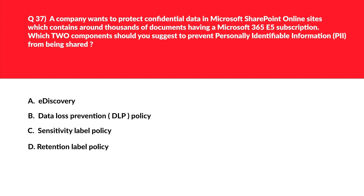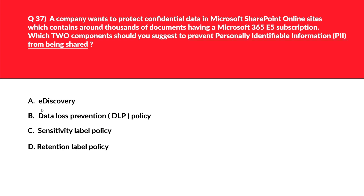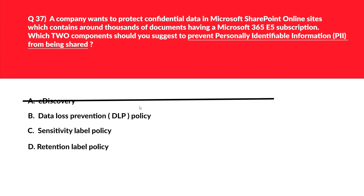Option C — Microsoft Information Protection — is locked as the correct answer. Looking at the next question: option A is eDiscovery, which helps organize and respond to legal matters or internal investigations — not required here, so A is out. Option B is Data Loss Prevention (DLP) policy, designed to detect, monitor, and protect sensitive information across SharePoint Online and other Microsoft 365 services, identifying and blocking sharing of confidential data such as PII. This is a potential answer.